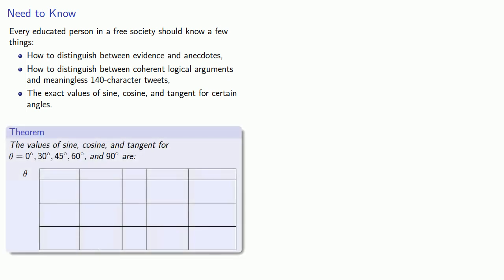And so we have the following results: the values of sine, cosine, and tangent for angles of 0, 30 degrees, 45 degrees, 60 degrees, and 90 degrees.